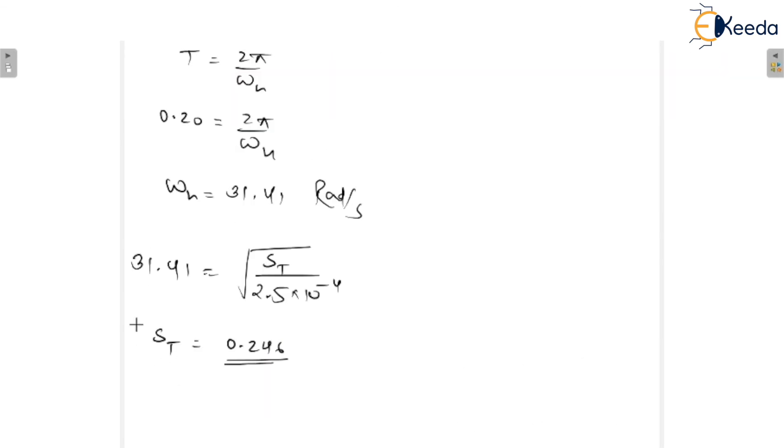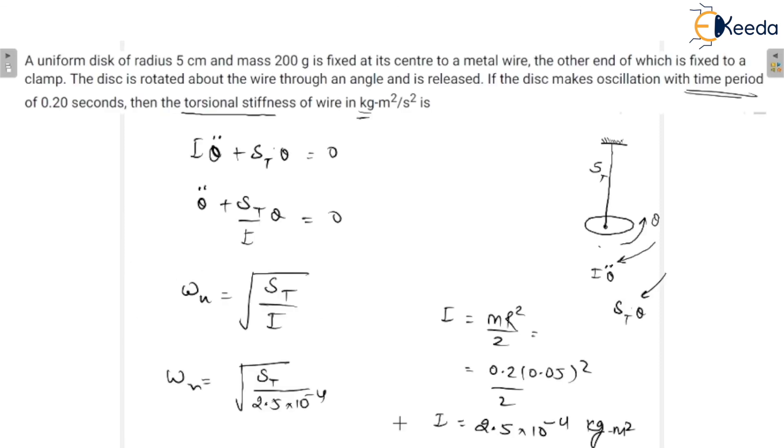And it would come out to be st equals 0.246 kilogram meter squared per second squared. So the final answer is st equals 0.246 kg·m²/s². I hope you will understand this whole solution.